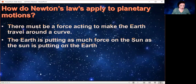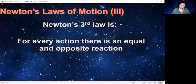The earth is putting as much force on the sun as the sun is putting on the earth. That is the third law. For every action, there is an equal and opposite reaction. So as much as the sun is pulling on the earth to keep it going in orbit, the earth is pulling on the sun.